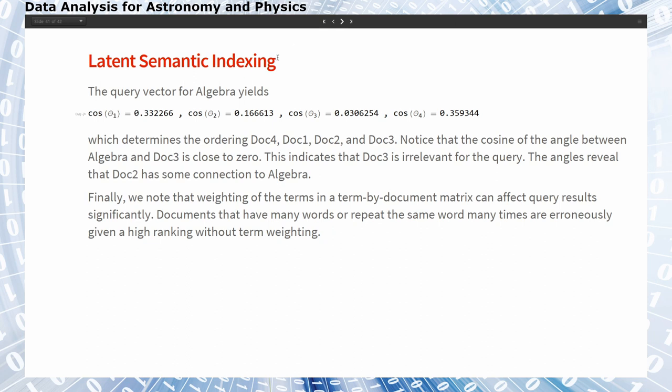Looking for algebra, we find these cosines with documents 1 and 4 being almost equally relevant, and then document 2 and document 3 almost irrelevant. The angles show that document 2 has some connection to algebra.